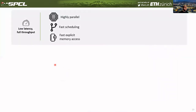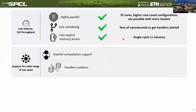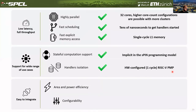To recap the principles we discussed: for low latency and high throughput, PSPIN is highly parallel and configurable — you can add more cores or more clusters. It provides fast scheduling in tens of nanoseconds, and fast explicit memory access via the L1 memory. It supports a wide range of use cases; stateful computation support is implicit in the SPIN programming model. Handler isolation is achieved through the RISC-V PMP unit. And it is easy to integrate — small in area and power-efficient, plus configurable.